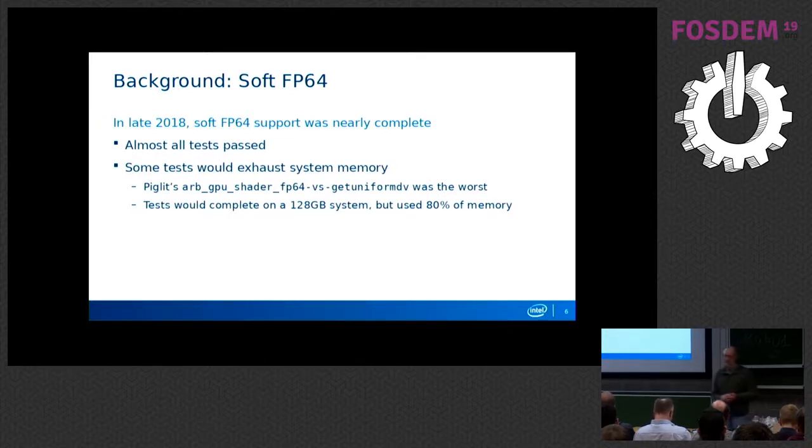And that's a big part of the reason why it's not a required feature for Vulkan, because just nobody actually wants it. So, late in 2018, work on soft FP64 was getting pretty close to done. Pretty much all the test cases were passing, but the guy that was working on it noticed there's a handful of these tests that I'll start them running, they're going to run for a while, and I'll go make a sandwich or something and come back, and Oomkiller has just wrecked my system. We tracked it down to a couple of test cases that seemed pretty innocuous.